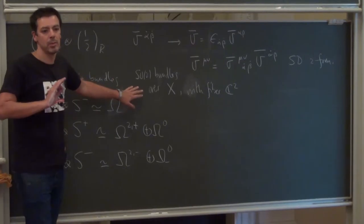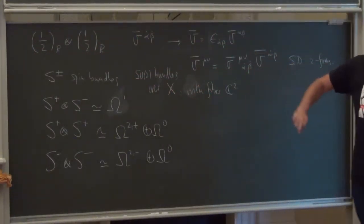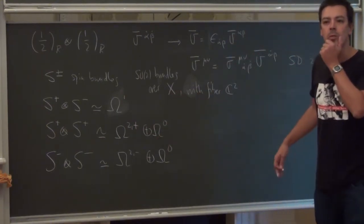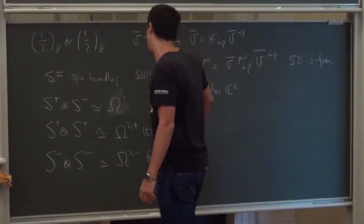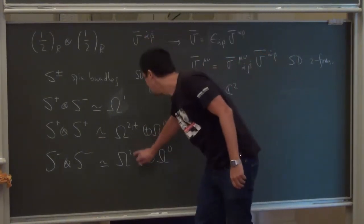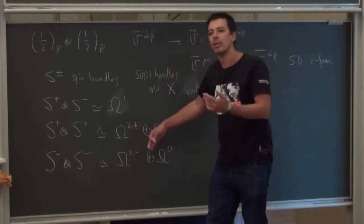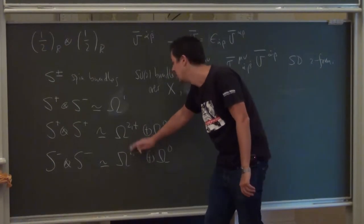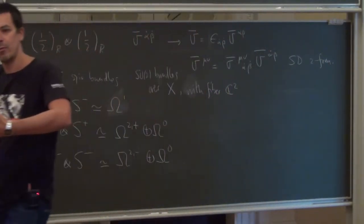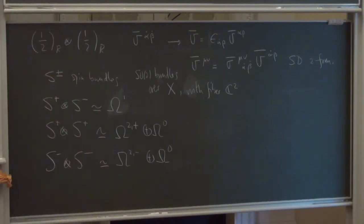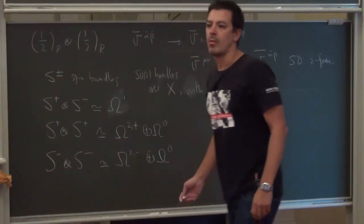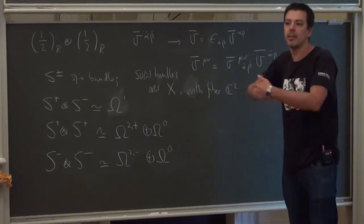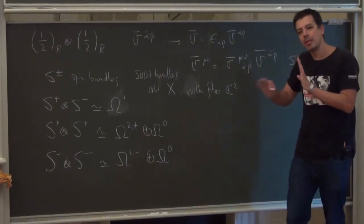Constructing these bundles is highly non-trivial. In R⁴ or Minkowski space you can always do it, but on a non-trivial manifold these bundles are not always defined. Student: Are S+ and S− isomorphic? Not really — they are locally isomorphic since both are SU(2) bundles, but globally they are not, because they are exchanged by changing the orientation of the manifold.